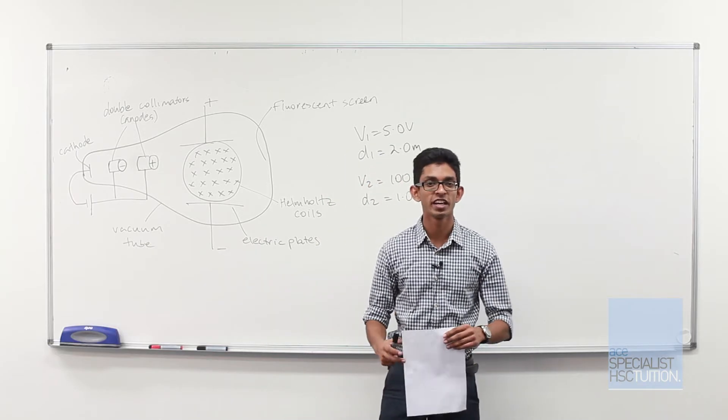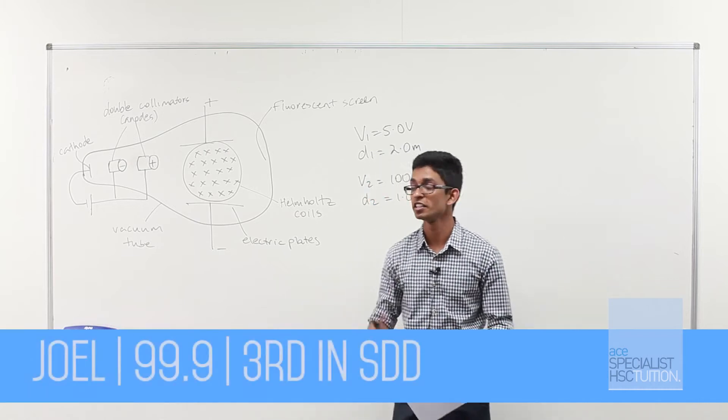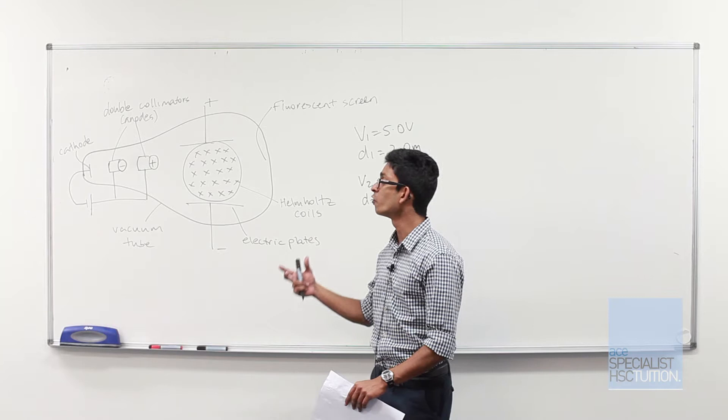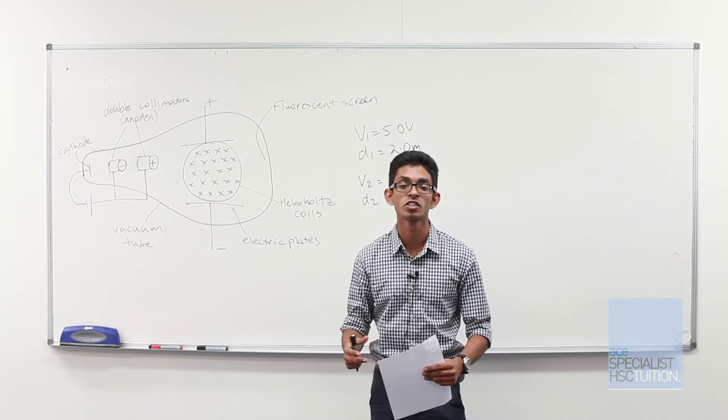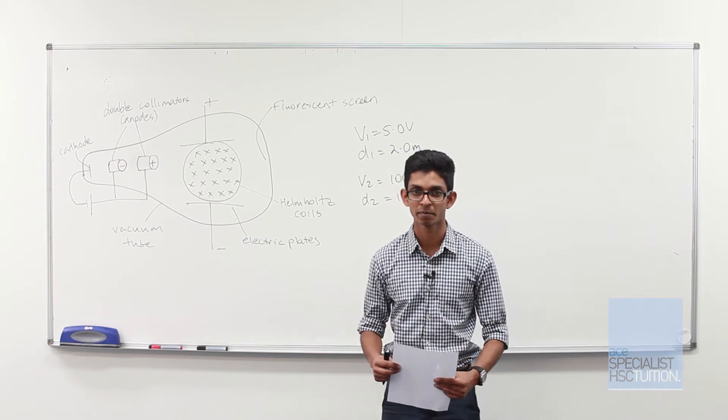So here we have a question out of the HSC Chemistry syllabus from Ideas to Implementation, and this is a variation of Thomson's experiment looking at the force of our magnetic field, or the strength of our magnetic field required to keep an electron undeflected through parallel electric plates.